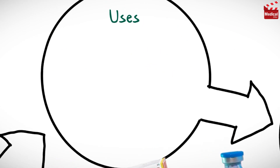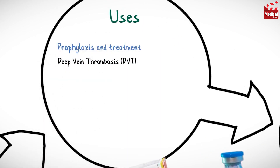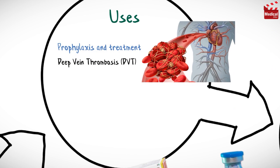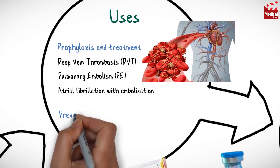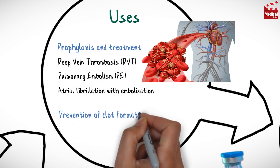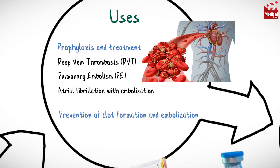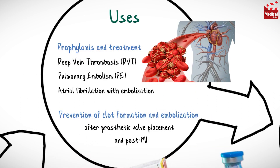Warfarin is used in prophylaxis and treatment of deep vein thrombosis, pulmonary embolism, and atrial fibrillation with embolization. It is also used for prevention of clot formation and embolization after prosthetic valve placement and post-myocardial infarction.